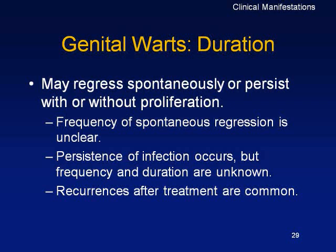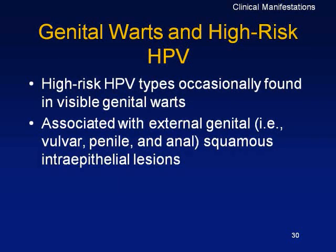High-risk HPV types — those in visible genital warts — are typically associated with vulvar, penile, or anal intraepithelial lesions. The infection doesn't only present externally; there may be internal lesions as well. The virus can spread from the vulva all the way to the cervix, traveling due to tropism and dysplasia of the tissues.